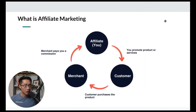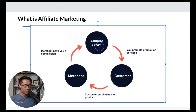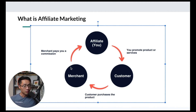Let's talk about what affiliate marketing is. As an affiliate, you help a brand or company promote their product or service to a customer. When a customer purchases that product through you, the merchant will pay you a commission for helping them promote. You can earn commission by promoting or driving sales to other people's products. This is a win-win-win situation because the customer gets the product they want, the merchant makes a sale, and you as an affiliate help facilitate the sale.